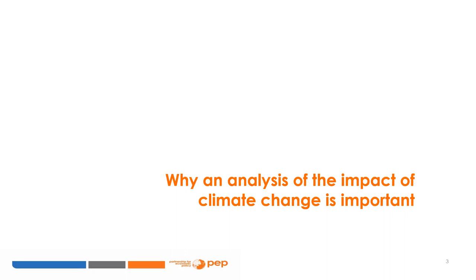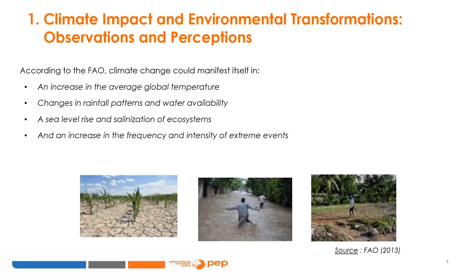But above all, we need to know why an analysis of the climate change impacts on agriculture is important. According to the FAO, climate change could manifest in an increase in average temperatures, changes in rainfall patterns and water availability, a sea level rise and salination of ecosystems, and an increase in the frequency and intensity of extreme events.